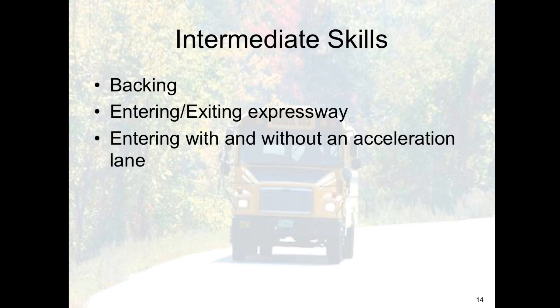Entering with an acceleration lane: signal, check your traffic, speed up while in the acceleration lane, and adjust your speed to merge. Check that blind spot. Enter the closest lane after passing the solid pavement line, and adjust speed to the flow of traffic. When entering without an acceleration lane: check the traffic, signal and accelerate to a safe speed on the ramp. If no vehicle is approaching, enter and accelerate to a normal speed. If a vehicle is approaching, find your space and merge in when it is safe to do so.